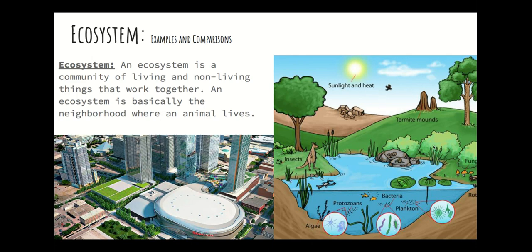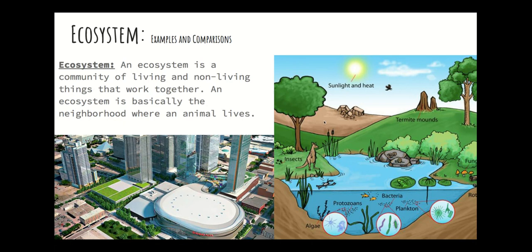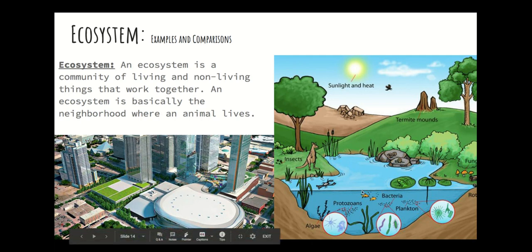Here's an example of an ecosystem. We have lots of living things: trees, lily pads, frogs, fish, and bacteria. And lots of non-living things: dirt, sun, air, and water — those are the abiotic things. They're all working together so that everything can coexist. For example, a fish living in a pond needs sunlight and bacteria in its ecosystem to be able to survive.